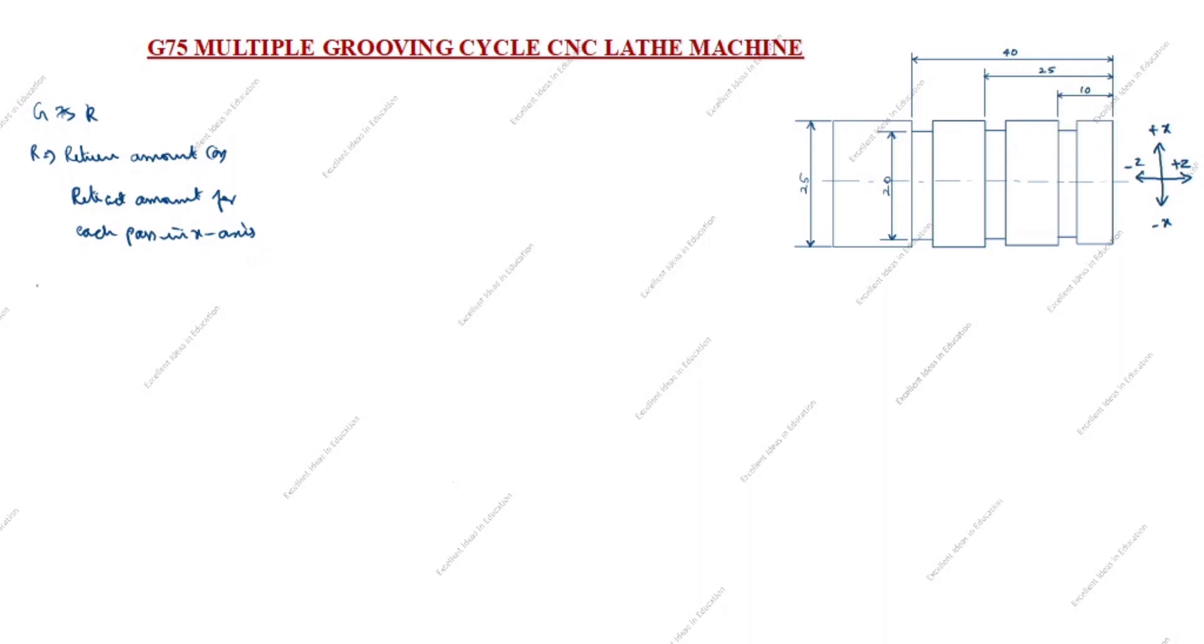Next, G75 code is G75 X Z P Q F. What is X? X is minor diameter.